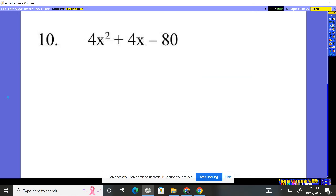Number 10. Again, a number in front of the x squared means it's got to be factored out. 4 times x squared gives you 4x squared. 4 times x gives you 4x. 4 times 20 will give you that minus 80 there, a negative 20.